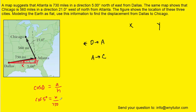Solving this equation for the X component, we multiply both sides by 730, which cancels it out on the right. So the X component is equal to 730 times the cosine of 5. We're going to plug that into our table: 730 times the cosine of 5.